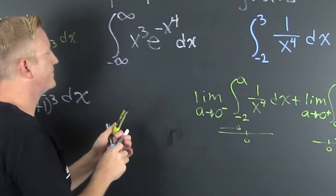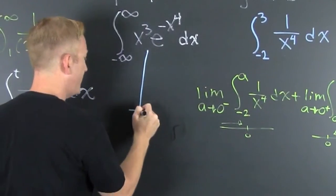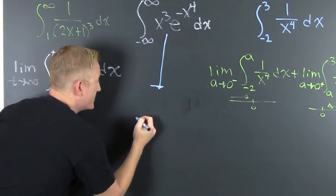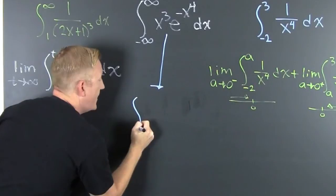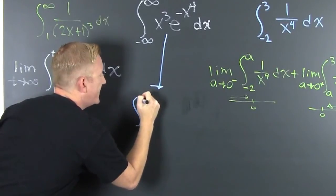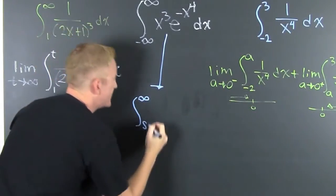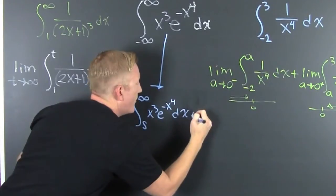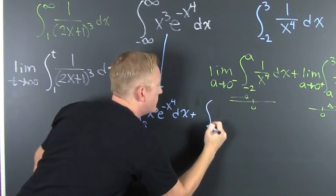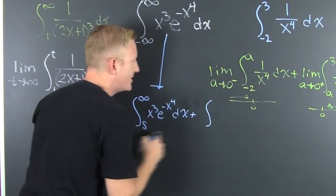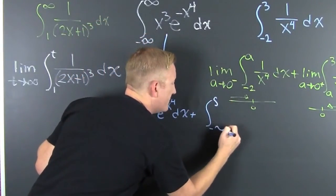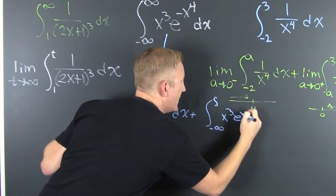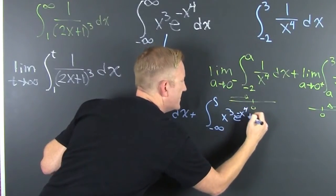All right. Now that third case, this one, double-ended. I guess we need to take it on down here. I'm going to break it up into two cases. So then I want to go from infinity to s of x to the third e to the minus x to the fourth dx. And I want to add that to s to minus infinity, and then this is x to the third e to the x to the minus fourth dx.